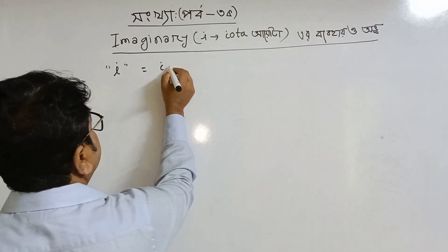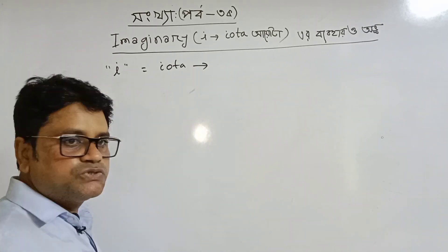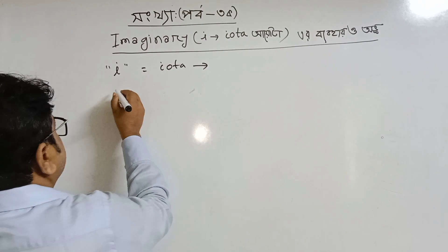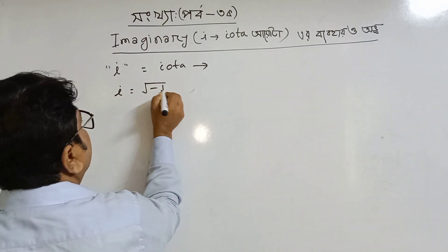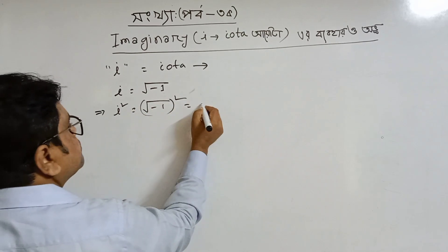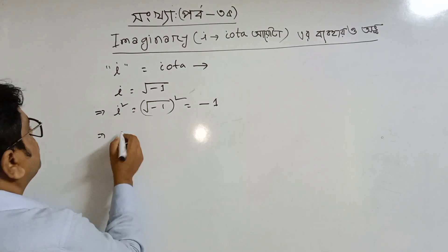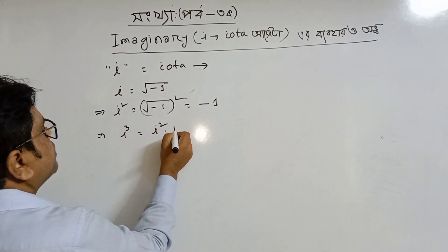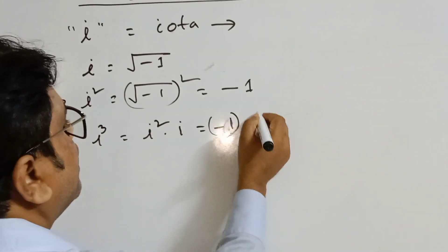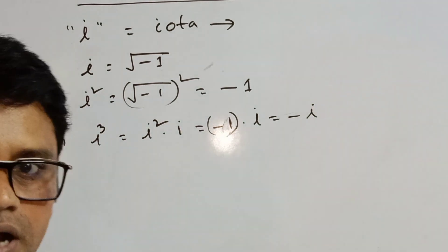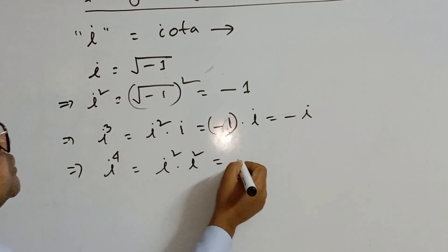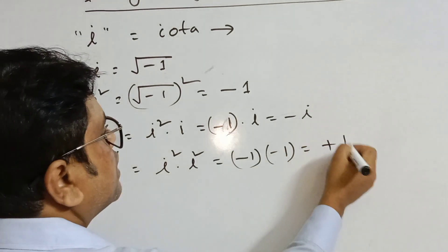What is this? As for the basic level, we don't have the same number. I must have known that I will tell you: i³ is equal to i² into i, which is minus 1 into i. And i² into i² into i² is equal to minus 1 into minus 1, which is equal to plus 1. Okay.